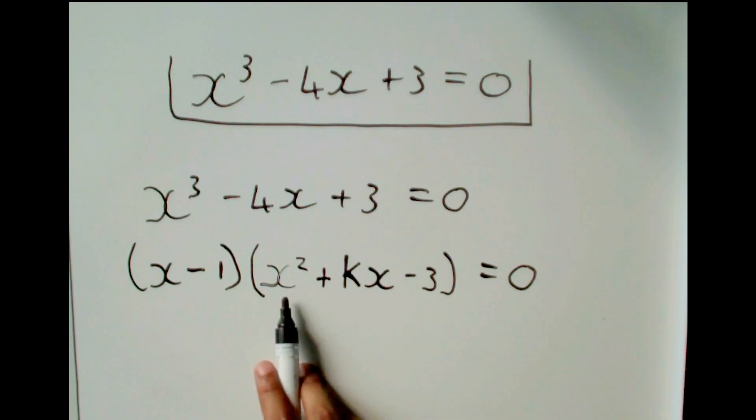So x times x squared will give me x cubed. And minus 1 times minus 3 will give me 3. That is how we got these two numbers over here. The middle term, we do not know.